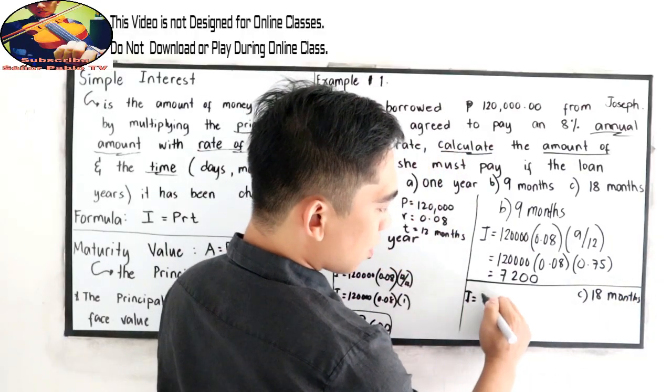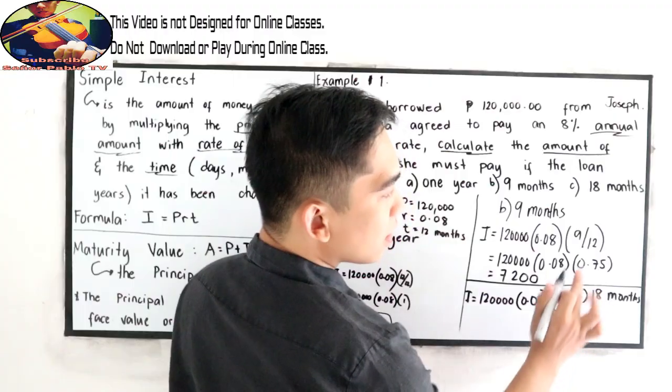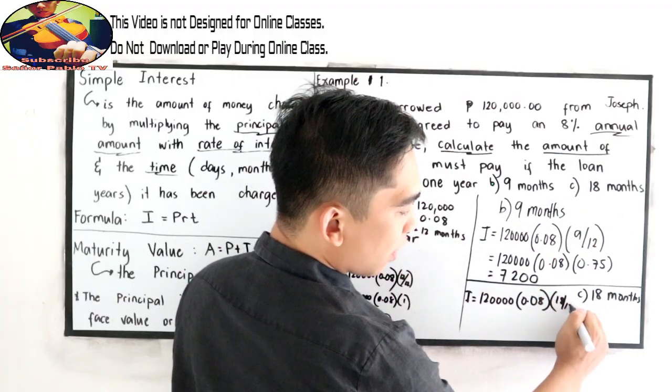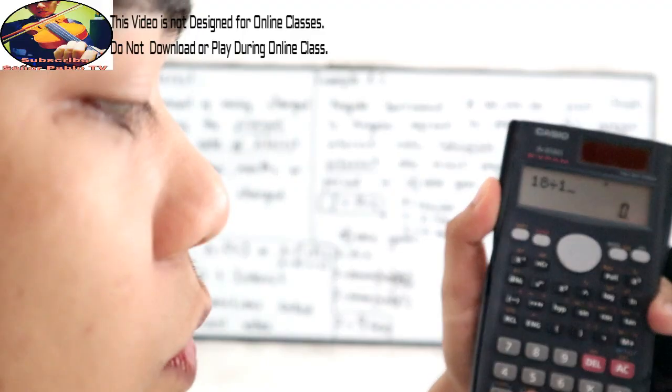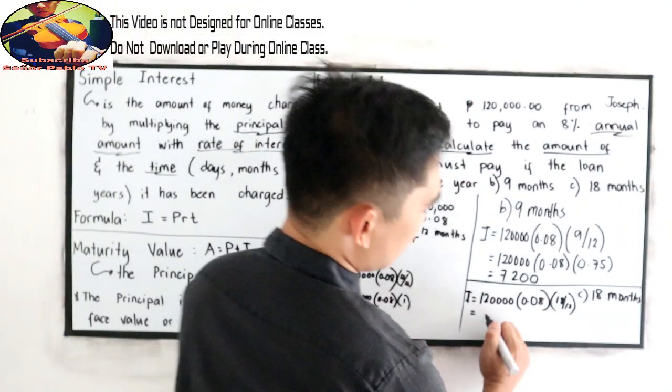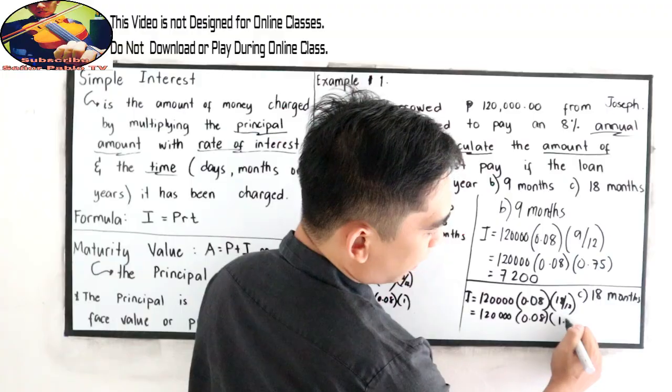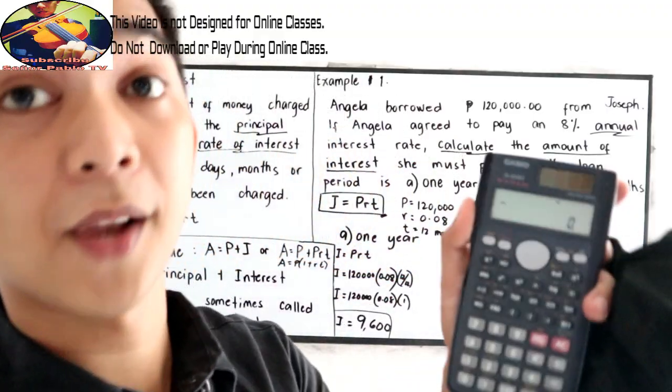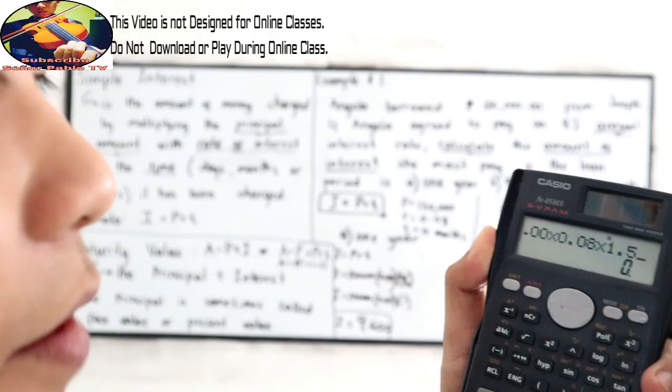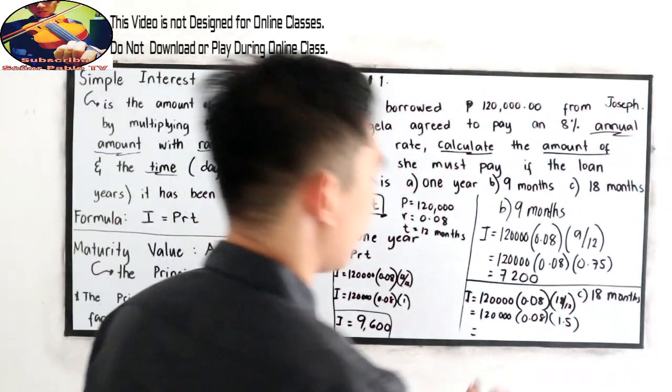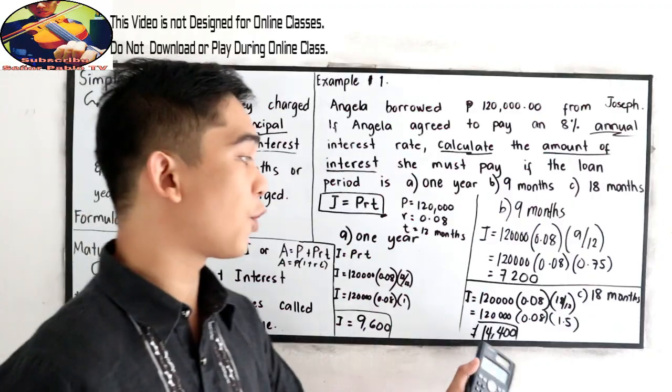Interest is equal to 120,000 times 0.08 times 18 months. So 18 over 12. So what is 18 over 12? 18 divided by 12. That is 1.5. So 120,000 times 0.08 times 1.5. So multiply. 120,000 times 0.08 times 1.5. 14,400. So after 18 months, the interest is 14,400.